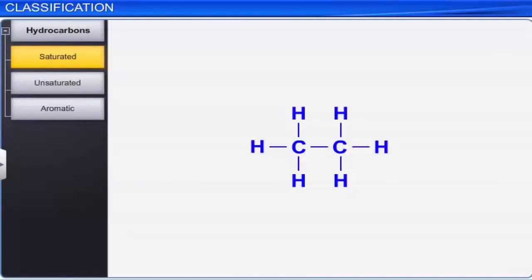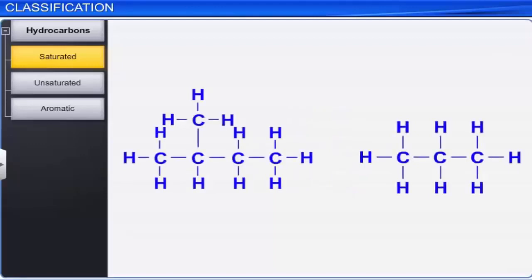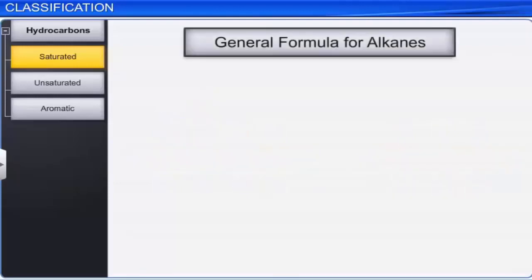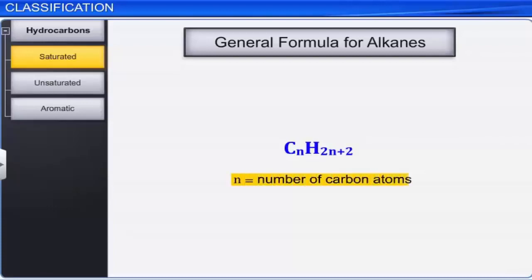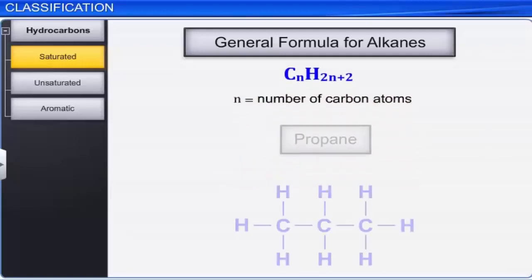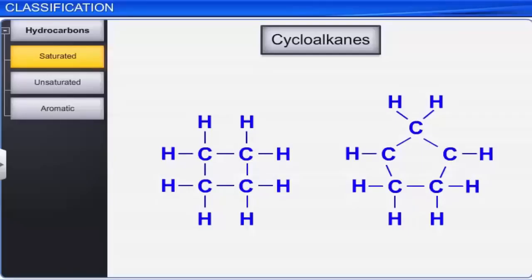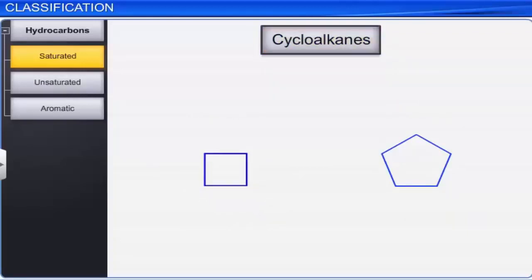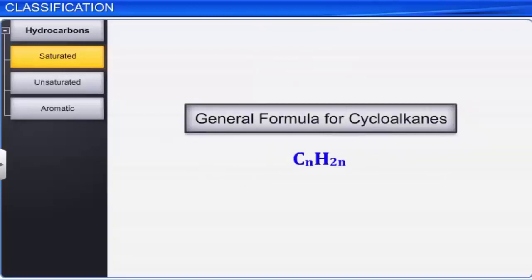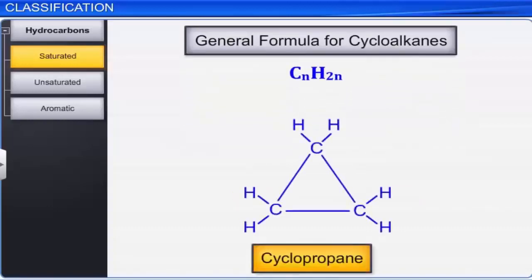Saturated hydrocarbons are the hydrocarbons consisting of carbon-to-carbon single bonds. Saturated, open chain, or acyclic hydrocarbons, in which carbon atoms are linked by straight or branched chains, are called alkanes. The general formula for alkanes is CₙH₂ₙ₊₂, where N is equal to the number of carbon atoms present. For example, propane. Saturated hydrocarbons in which the carbon atoms join together to form a closed chain are called cycloalkanes. The general formula for cycloalkanes is CₙH₂ₙ, where N is equal to the number of carbon atoms present. For example, cyclopropane.